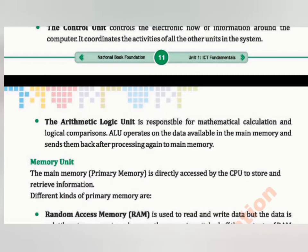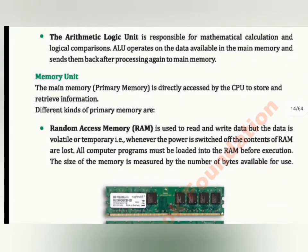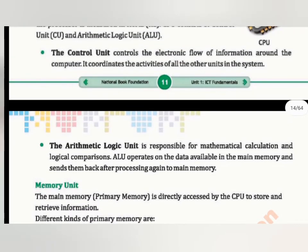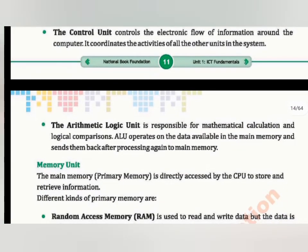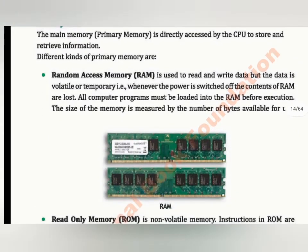ALU operates on the data available in the memory unit. ALU — arithmetic logic unit — will send data to your main memory unit and send it back to processing. Now, the memory unit: it is the main primary unit, very close to our CPU so that we consider it part of the CPU. Memory unit has two types — first is RAM and second is ROM.